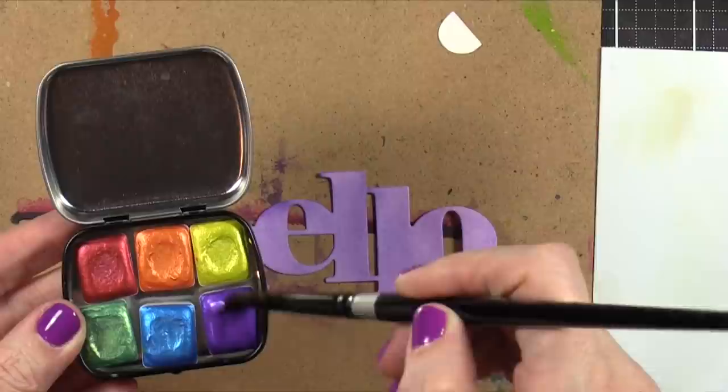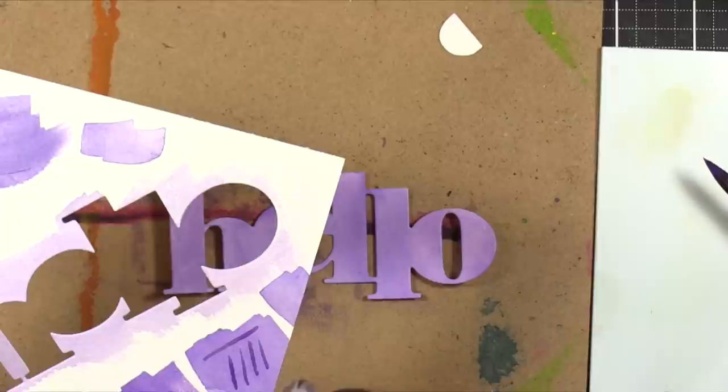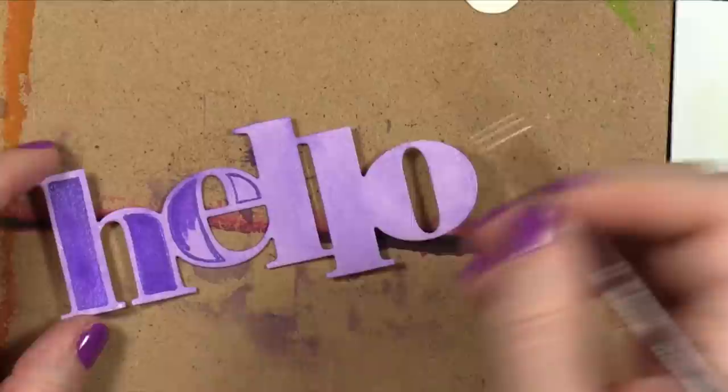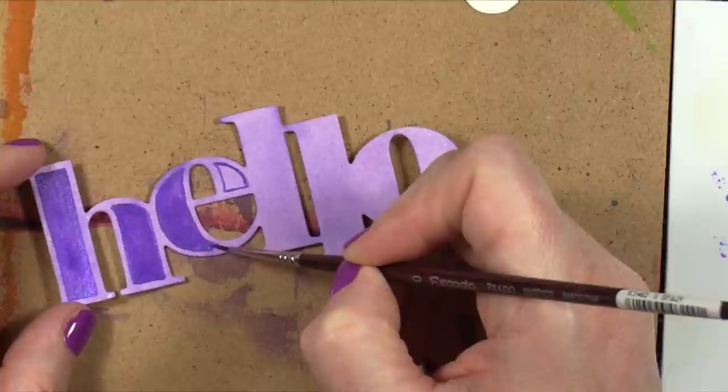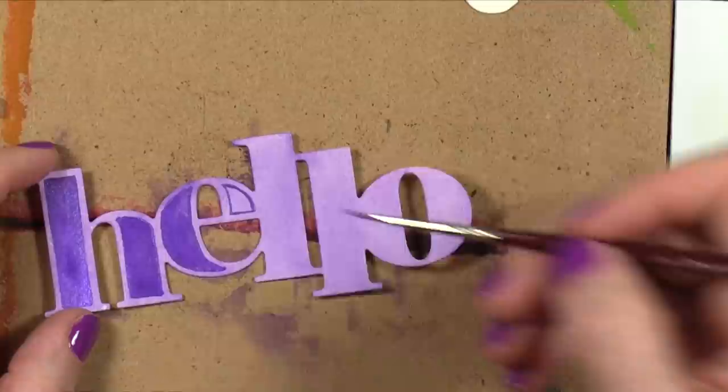And I'm going to be using a very, very tiny brush. I believe it's a size zero brush to paint the interior areas of these letters. I want to have that pale purple almost look like a border around the outside edge. And since this dark purple covers up that pale purple just beautifully, it worked out well.